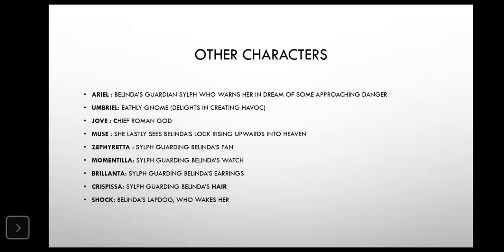Next is Umbriel, who is an earthly gnome. There are four types of supernatural machinery: gnomes, sylphs, nymphs, and salamanders. Gnomes represent vices or the bad side of supernatural elements — they are associated with evil. Next is Jove, the chief supreme god, also known by different names such as Jupiter.